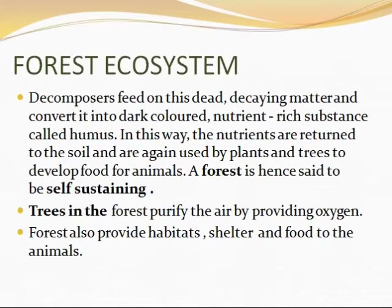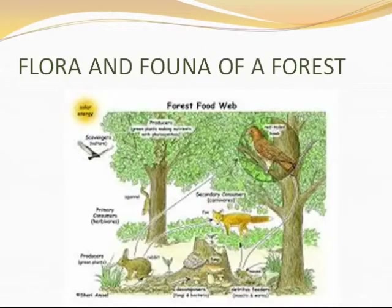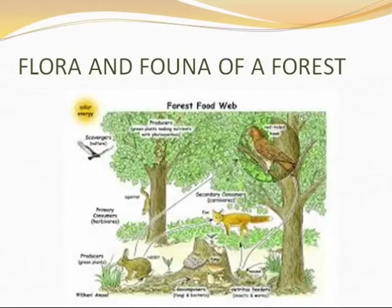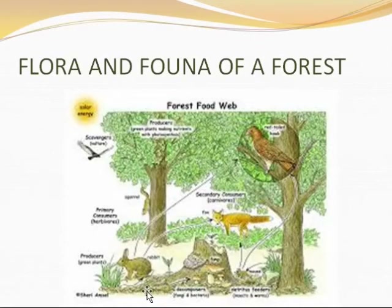Next, what are the different types of flora and fauna present in a forest? Flora means plants and fauna means animals. There are different types of animals and plants present at different levels: the topmost or uppermost layer, then the understory layer, then the shrub layer, then the herb layer, and the lowest is the forest floor.